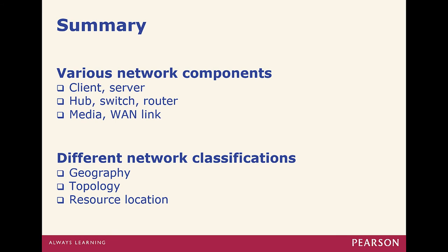In summary, we talked about the various network components, like clients and servers, hubs, switches, routers. We talked about things like copper-based cabling, like Ethernet, CAT5, CAT5e, CAT6, WANs, Fiber. We talked about different types of classifications, geography, topology, resource location. And that's it for this chapter. I wanted to thank you guys.